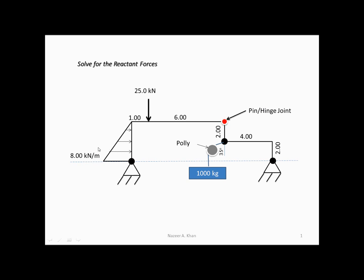We'll need to basically calculate a point load, put it through the centroid of this shape, and the magnitude of that point load will equal the area of the shape. The area of the horizontal component here is given by 8 kilonewtons per meter and the vertical component will be given by the height which is 2 plus 2, giving you the entire height of 4. If I were to calculate the area of a triangle, it's base times height divided by 2. So 8 times 4 is 32, divided by 2 gives you 16.